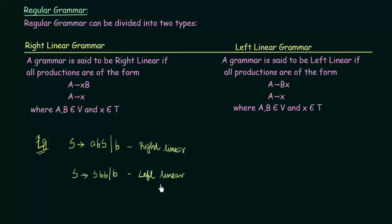I hope this made the concept of right linear grammar and left linear grammar clear, which are the types of regular grammar. We also understood the meaning of grammar and the types of grammar according to Noam Chomsky's classification. I hope this was helpful to you. Thank you for watching and see you in the next one.